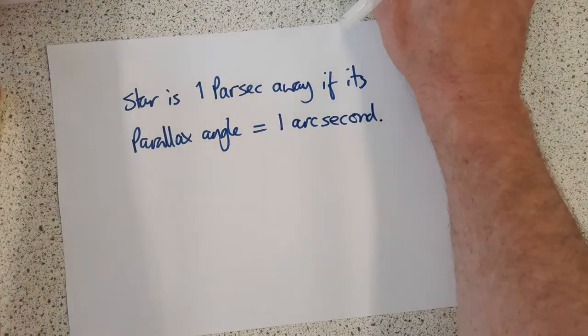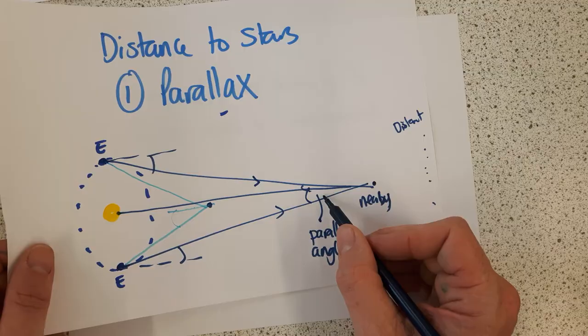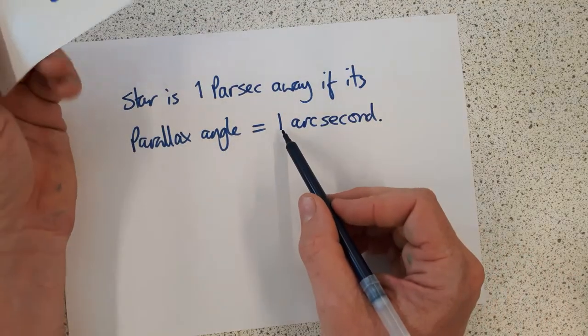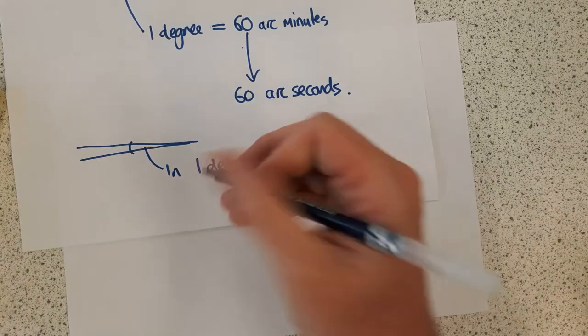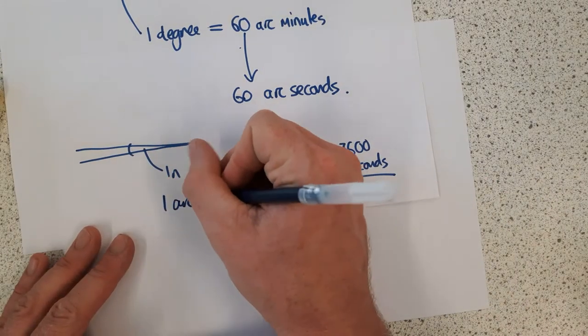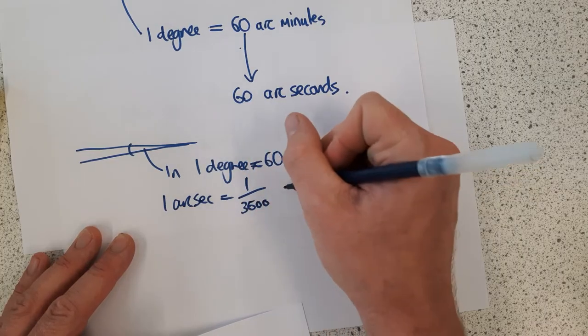What we're saying here is that if the angle here, the parallax angle, is one arc second, which is 1/3600th of a degree. One arc second equals 1/3600th of a degree.